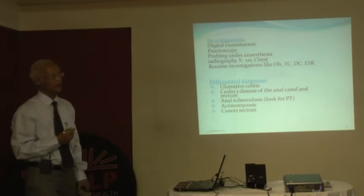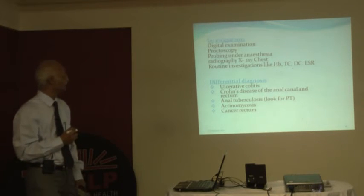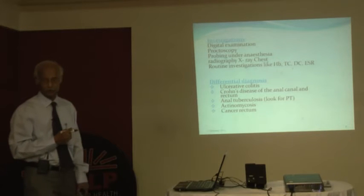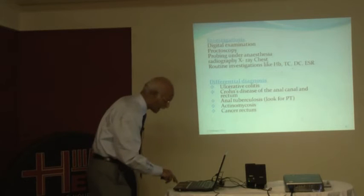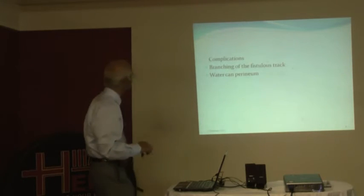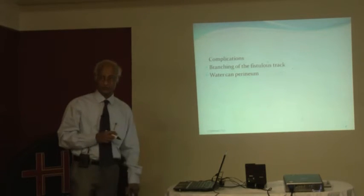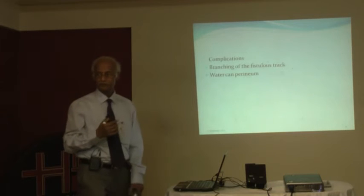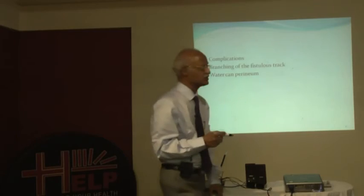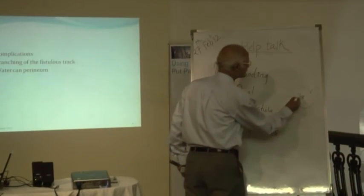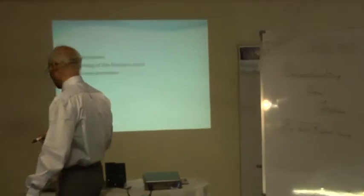The differential diagnoses include ulcerative colitis, Crohn's disease of the anal canal and rectum, anal tuberculosis, actinomycosis, cancer of the rectum, and plain infection. As a complication, the branching of the fistula tract with multiple openings leads to pus discharge from several openings, and therefore it is called a watering-can perineum.